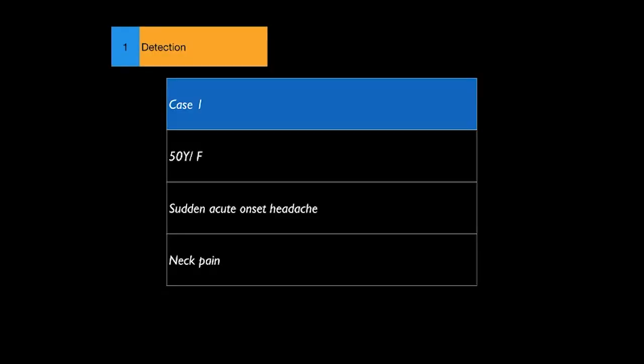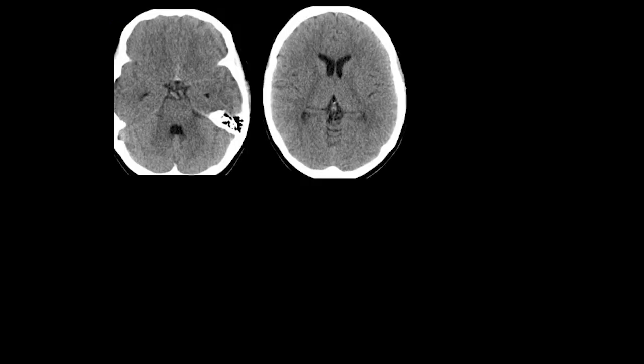Case one: a 50-year-old female presenting at a peripheral hospital with sudden onset acute headache, neck pain, and photophobia — a typical clinical history associated with subarachnoid bleed. A CT head scan was performed around midnight, and the consultant radiologist missed the subarachnoid bleed within the anterior interhemispheric fissure and the prepontine cistern. A lumbar puncture was recommended for the following morning.